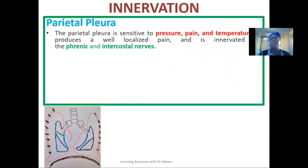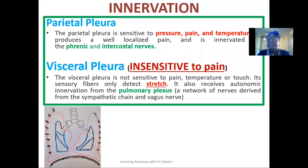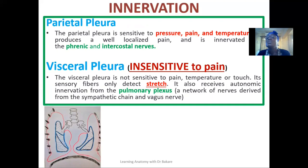For innervation: the parietal pleural is innervated by the phrenic nerve and the intercostal nerves, and is sensitive to pain, pressure, and temperature. The visceral pleural is insensitive to pain, pressure, and temperature because it is not innervated by nerves that carry those stimuli. Instead, it is sensitive to stretch stimuli and is innervated by the pulmonary plexus, which is formed by the sympathetic chain and the vagus nerve around the root of the lungs.